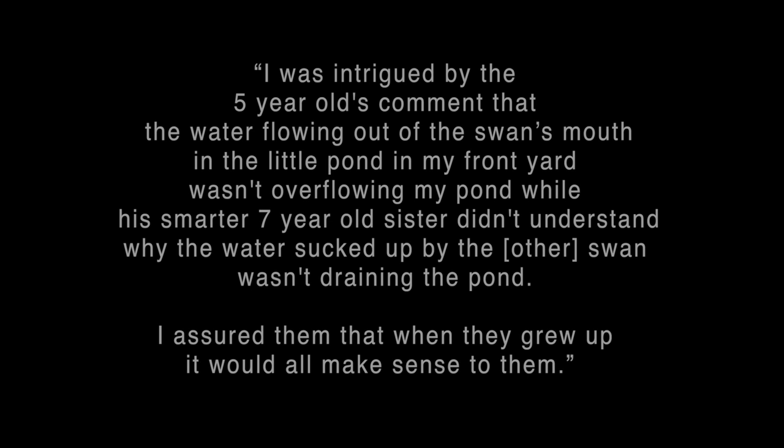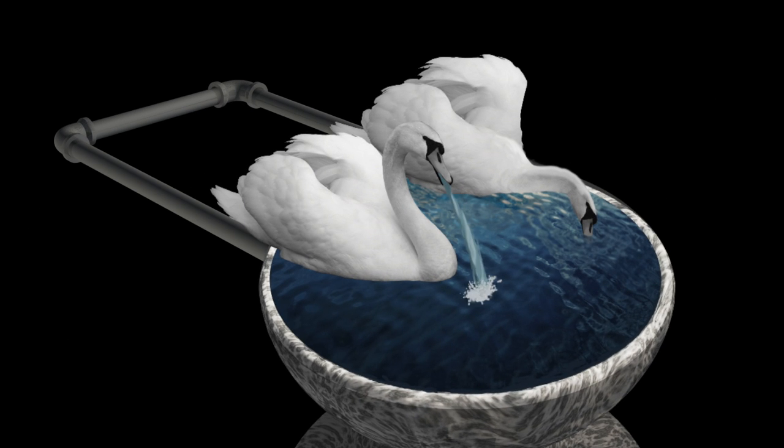I was intrigued by the five-year-old's comment that the water flowing out of the swan's mouth in the little pond in my front yard wasn't overflowing my pond, while his smarter seven-year-old sister didn't understand why the water sucked up by the other swan wasn't draining the pond. I assured them that when they grew up it would all make sense to them. In Mr. IMF's picture of how money works, the money just flows in a lovely circle from the pond to the input swan's mouth and back out the output swan's mouth to the pond.